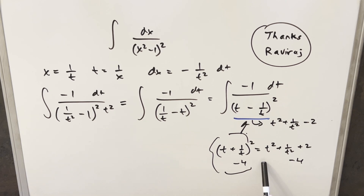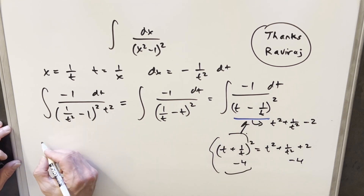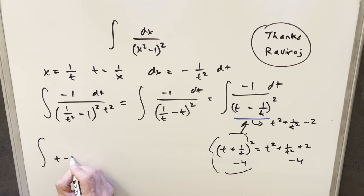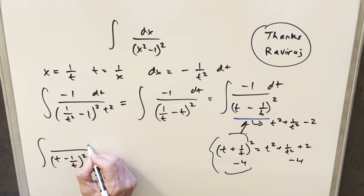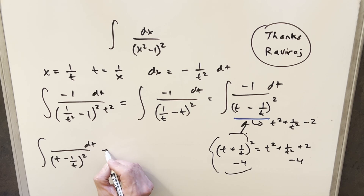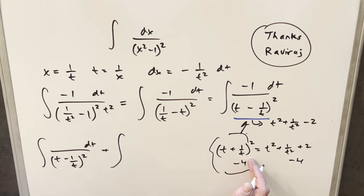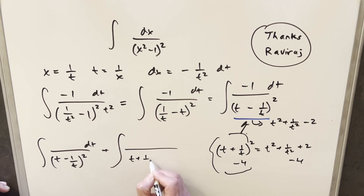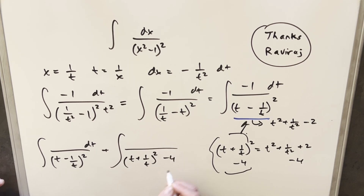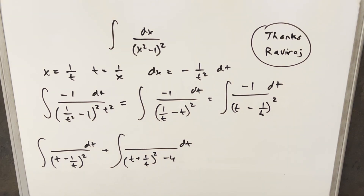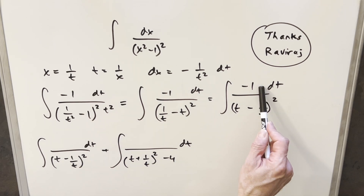What I'm working towards is splitting this into two integrals. The first one will have (t minus 1/t) squared as the denominator, with the numerator left blank for now. The second integral will use (t plus 1/t) squared minus 4 as the denominator. These are the same thing, so we can do this. We just need to figure out what the numerators are so they still combine to give minus 1.